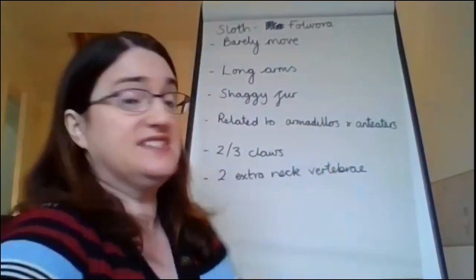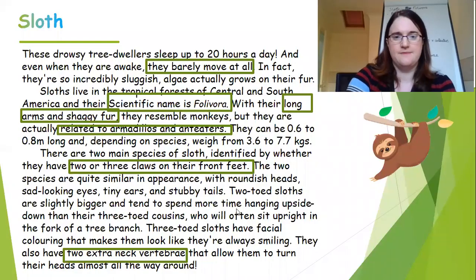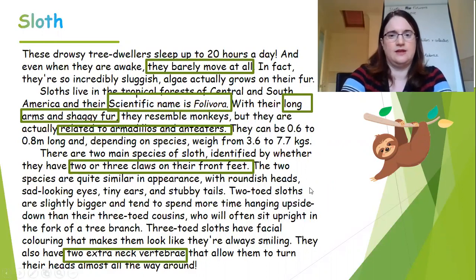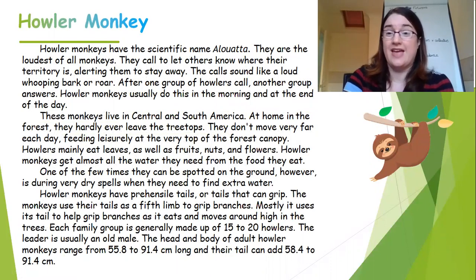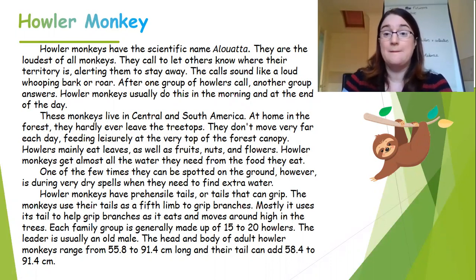You've got a choice of which animal to do. You're going to read some information on that animal and write a little list. You can see I've only got about six bits of information, so it's not going to take ages. Either pause now and go and do your own research, or if you'd like to do the Howler Monkey, I'm going to share the screen so you can see that information. You're going to make your plan — your list of information from that. If you don't want to do the howler monkey, press pause and get on. Press pause now and go and do that for me.